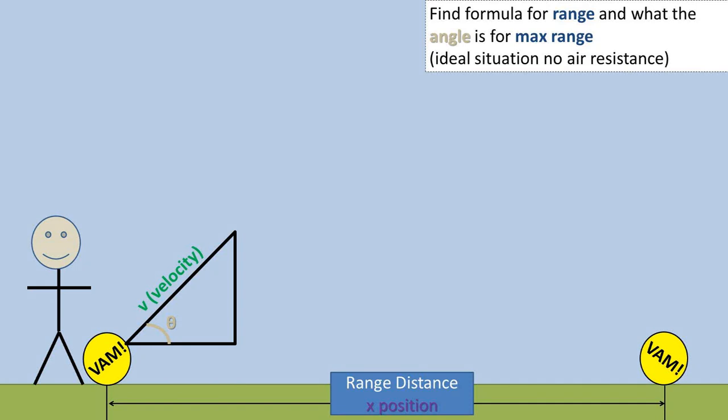In this problem, a person is kicking a ball at ground level, and we want to find out what the formula for the range is, and we also want to find out what angle the person should kick the ball at to get the maximum amount of range. We will be assuming an ideal situation, so no air resistance.